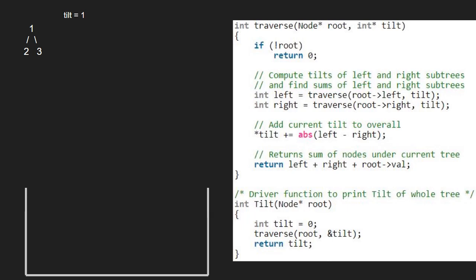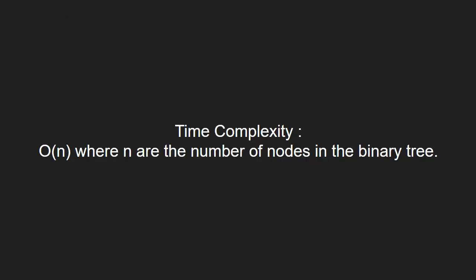Now let us have a look at the time complexity of the program. This code will run in O(n), where n is the number of nodes in the binary tree. With this, we come to an end of this tutorial. For any doubts or suggestions, please leave them in the comment section below. Thank you for watching.